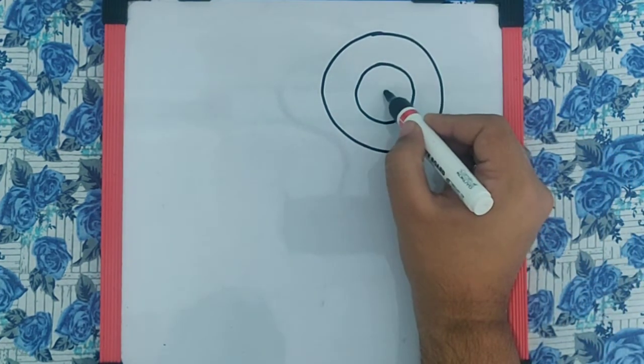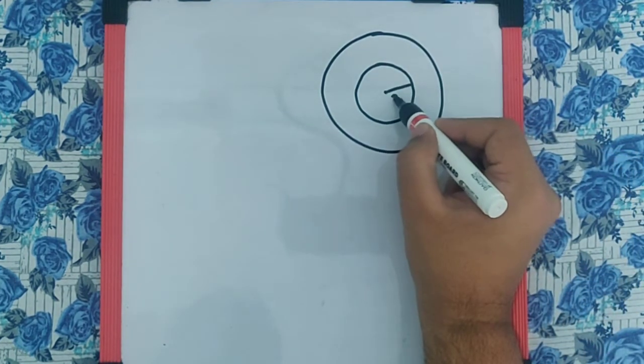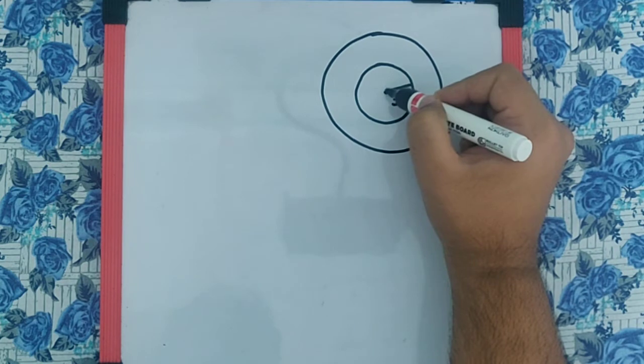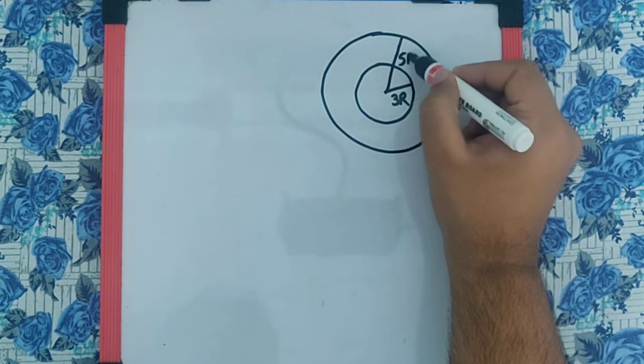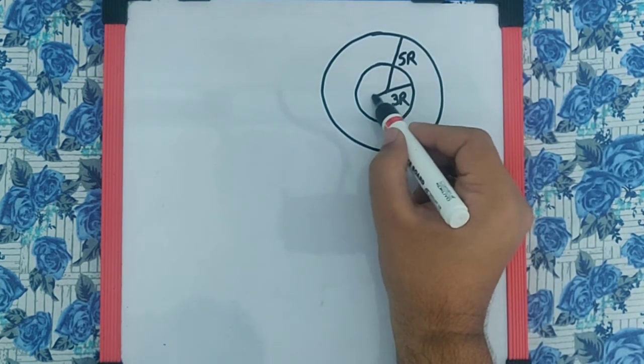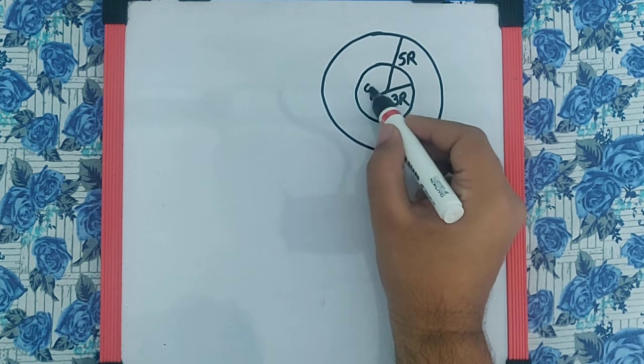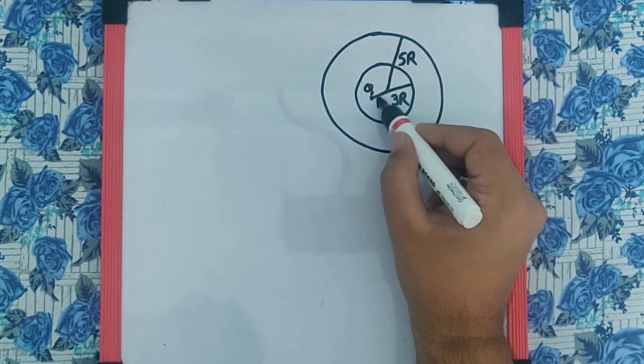So I can consider this as the spherical shell, where this radius is 3r, this radius is 5r, and this is where the charge is placed at a distance r.